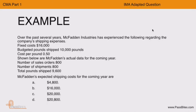Let's take an example. Over the past several years, McFadden Industries has experienced the following regarding shipping expenses: fixed costs are $16,000, budgeted pounds shipped are 10,000 pounds, and variable cost per pound is $0.50. The actual data for the coming year shows 800 sales orders, 800 shipments, and total pounds actually shipped of 9,600. We need to find the expected shipping cost for the coming period.